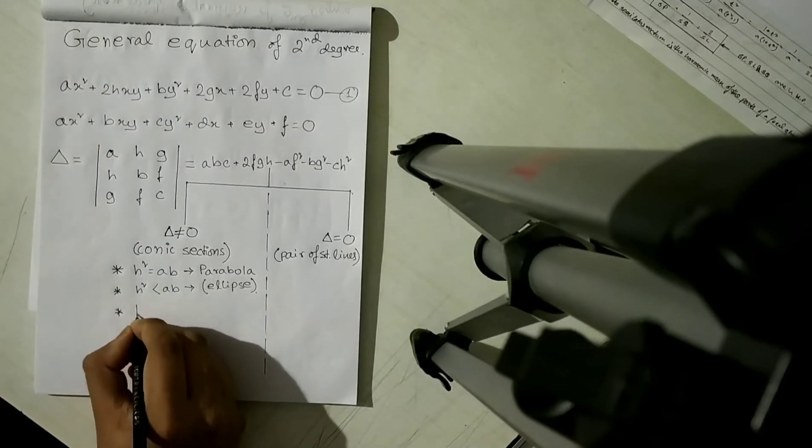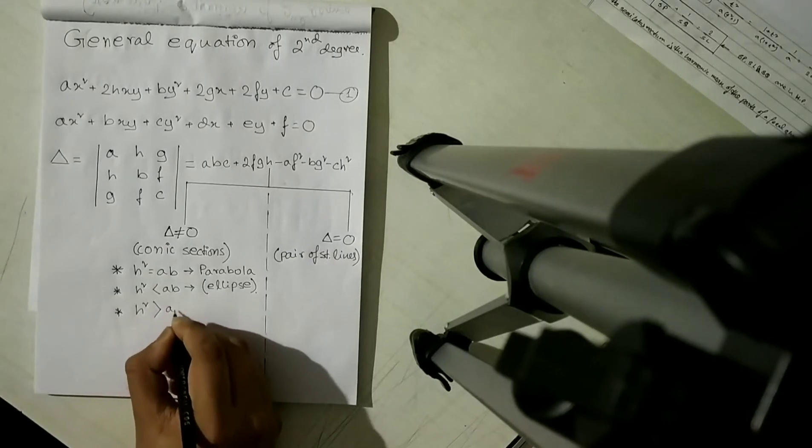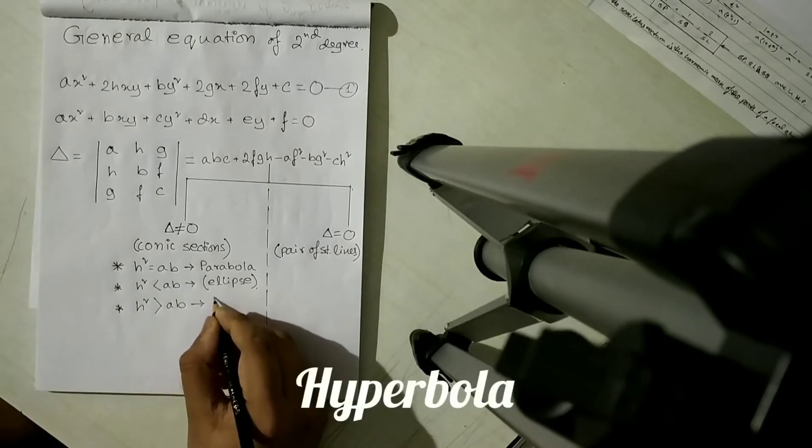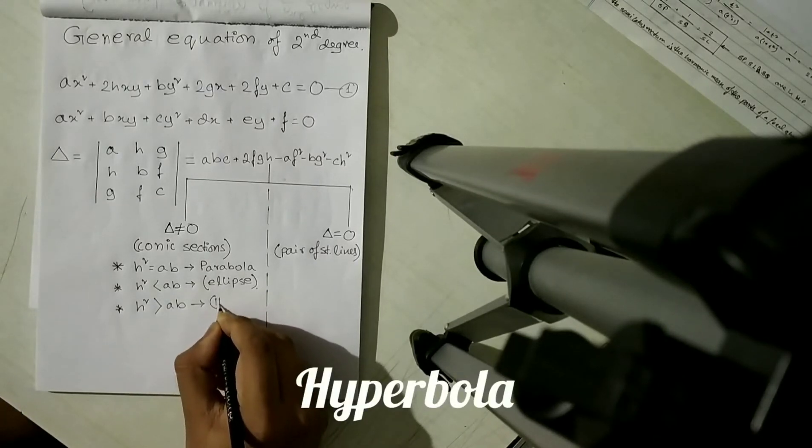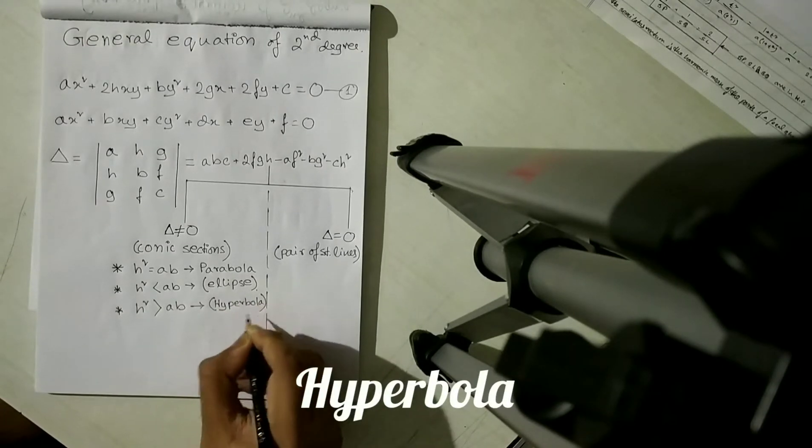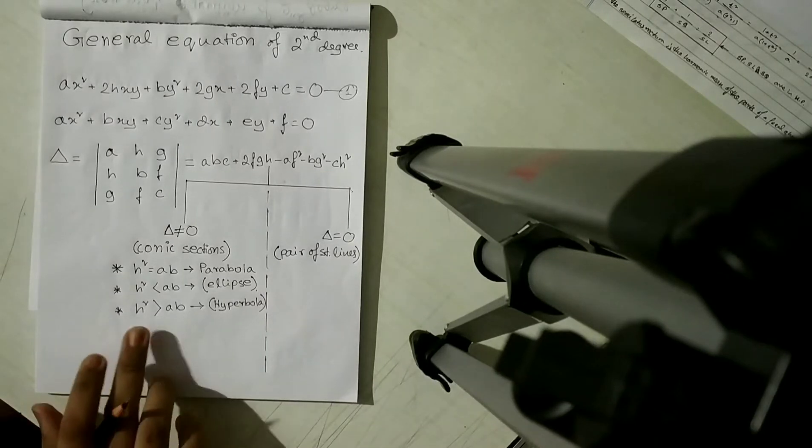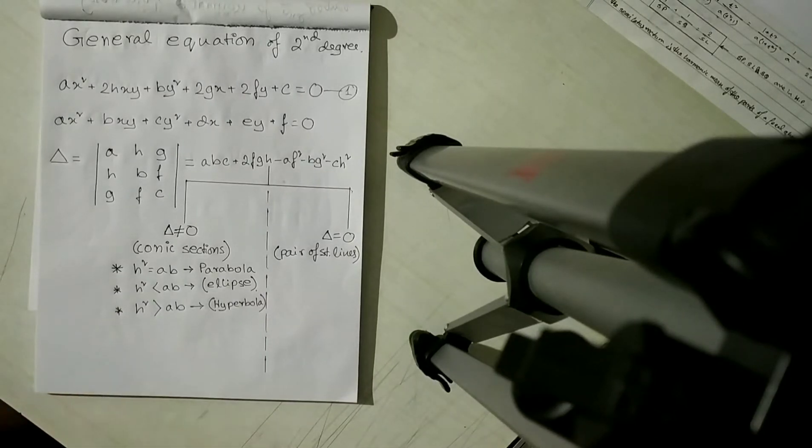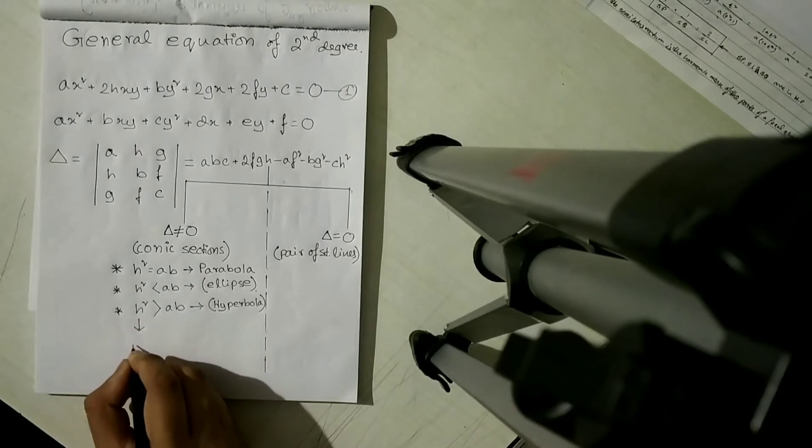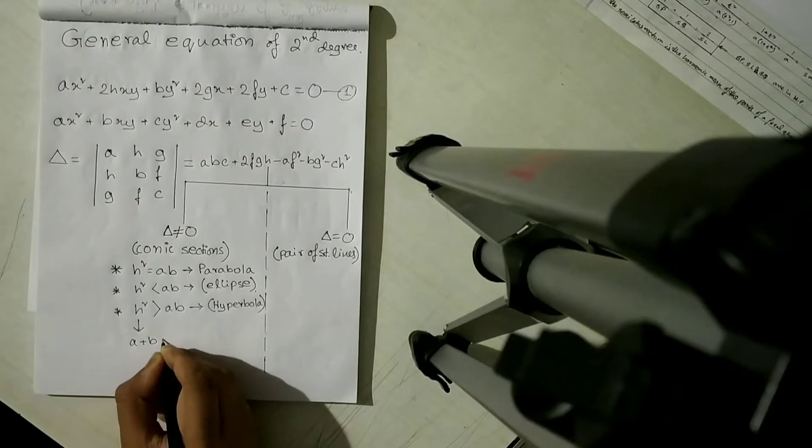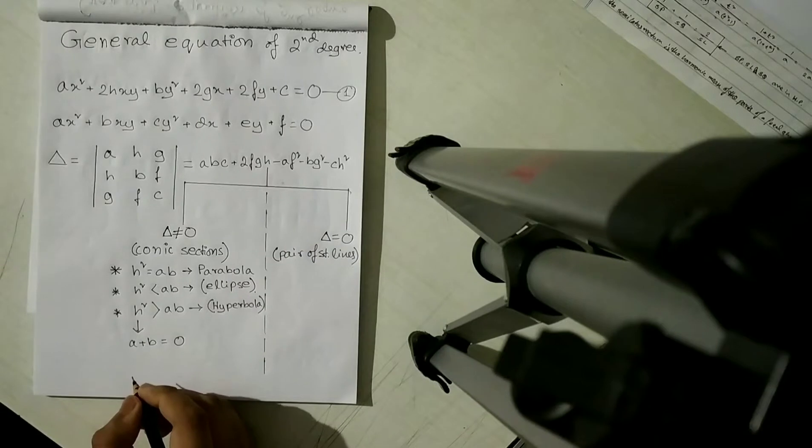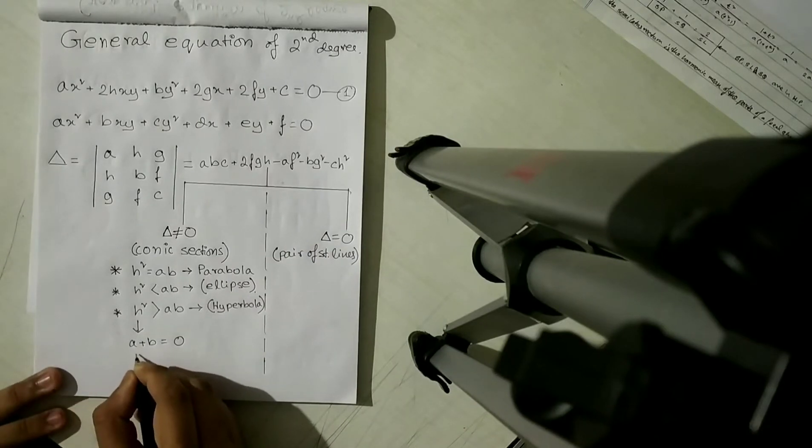If h² is greater than ab, it will give hyperbola. Now this particular case has even a lower case. That is, if a plus b is equal to 0, then the equation symbolizes a rectangular hyperbola.